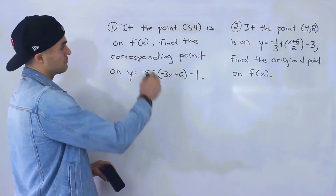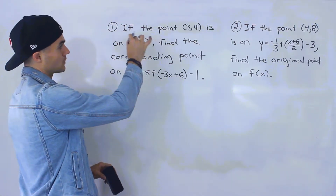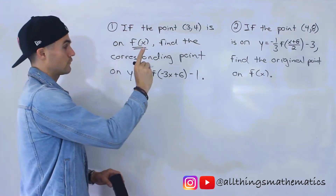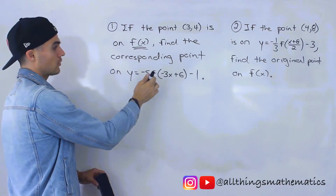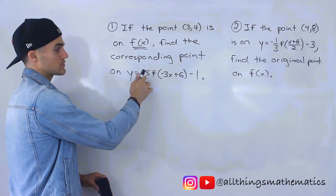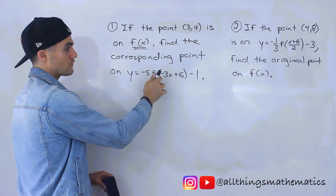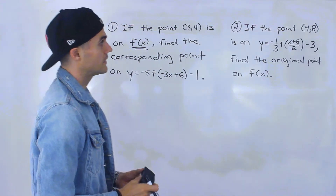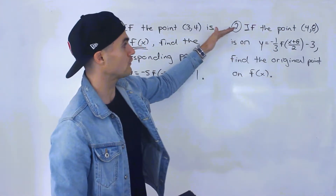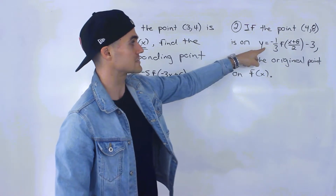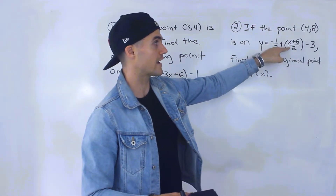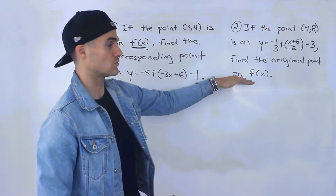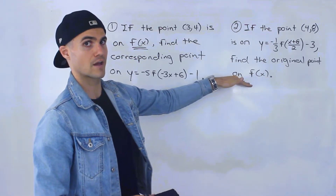So let's read both of them. In number one, we're told: if the point (3, 4) is on f of x — the parent function — find the corresponding point on the transformed function y equals negative 5 f of negative 3x plus 6, minus 1. And in number two, we're told: if the point (4, 8) is on the function y equals negative one-third f of x plus 8 over 2, minus 3, find the original point on f of x.